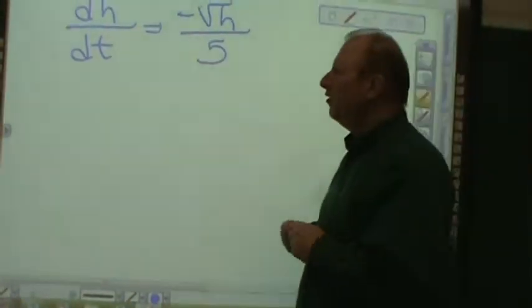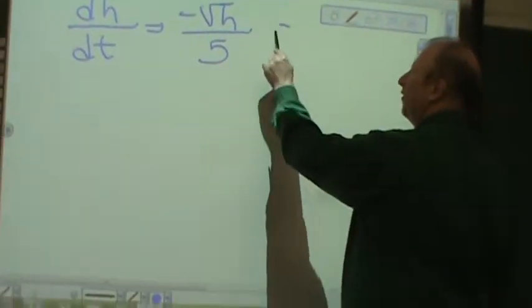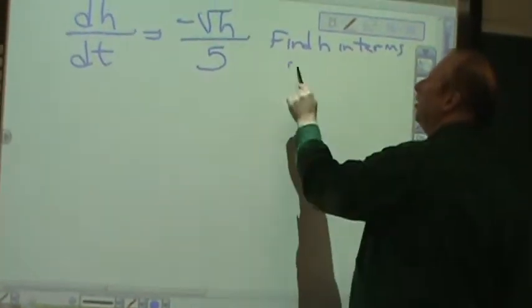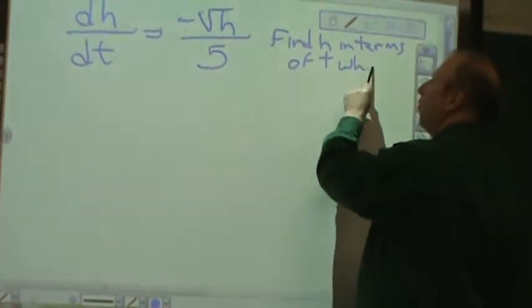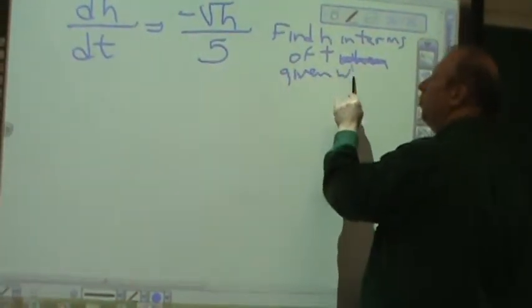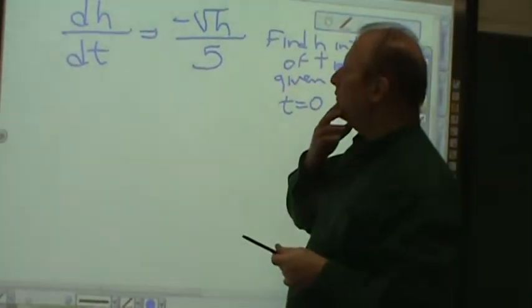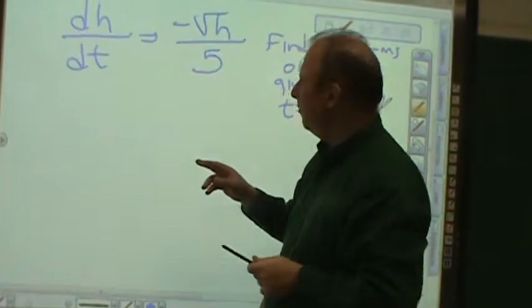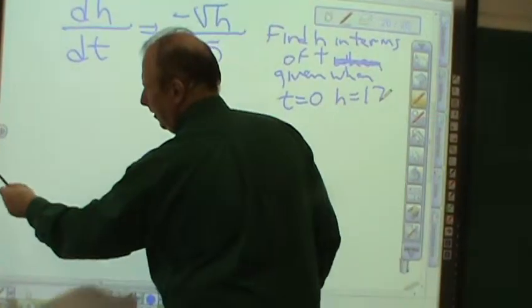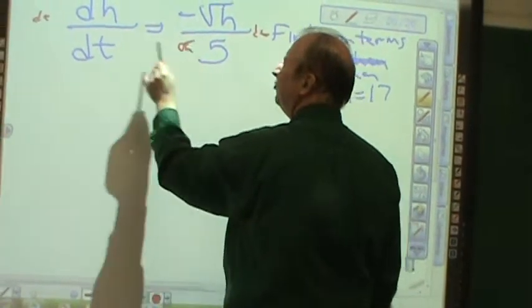The next part says, well, if dh/dt equals negative √h over 5, find h in terms of t when given when t is equal to 0, h is equal to 17. Let's look at what I know. If I multiply both sides by dt and then divide both sides by √h, let me just do this in my mind.